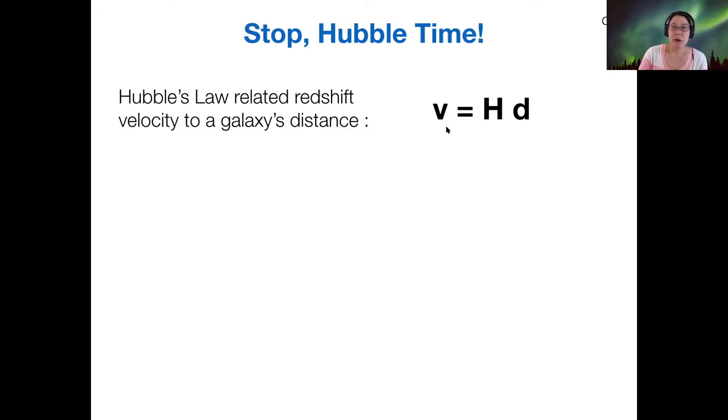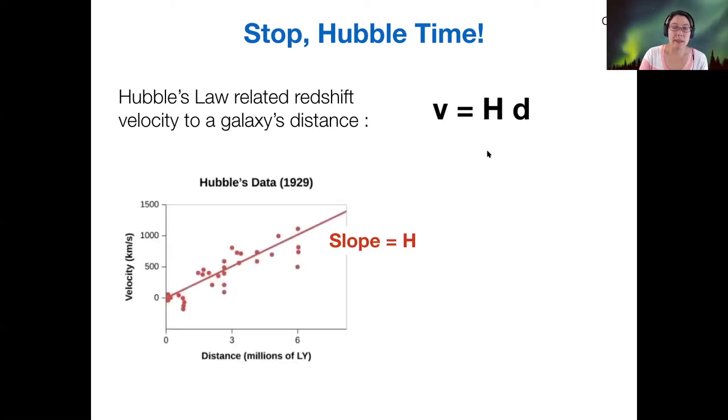And so for Hubble's law, just to review, this is the relationship that relates the distance of a galaxy to its speed or its redshift. And then the Hubble constant is this H. As a reminder, Hubble found this relationship by measuring the distances to distant galaxies and then also measuring the velocity by the redshift. And H, Hubble's constant, is the slope of the line that best fits this data.